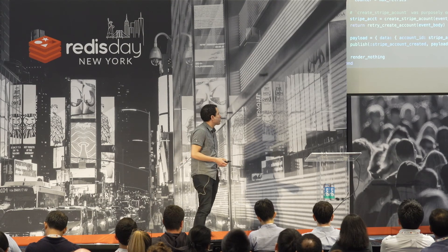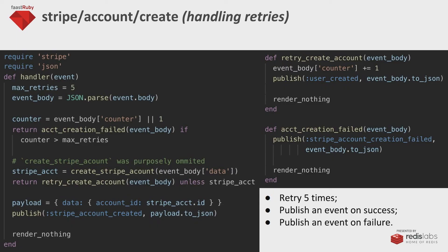I wrote a simple example of how to handle retries. You set a max retries number, get a counter, and do a recursive event call. At the end you publish 'stripe_account_create' with the payload JSON, adding the retry count to the payload. Once that function picks it up again, it will retry up to five times. If it fails, it just publishes 'account_creation_failed' and returns.